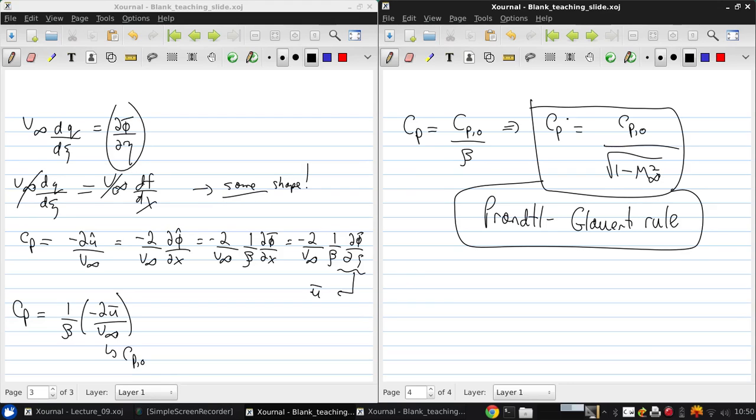Then we simply must get that cl is cl0 over the square root of 1 minus m infinity squared. And similarly cm is cm0, the incompressible moment coefficient, over the square root of 1 minus m infinity squared.